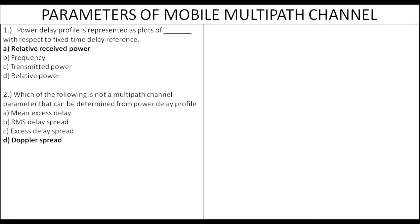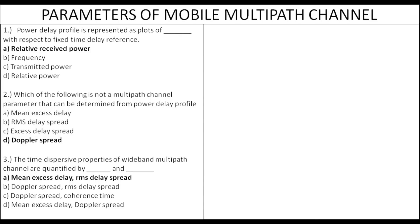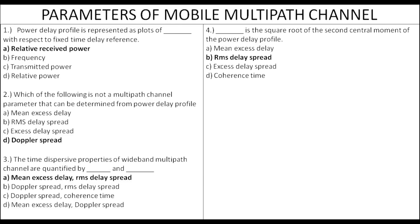For the multiple channel parameters, the delay profile determines mean excess delay, RMS delay spread, and excess delay spread. However, Doppler spread is not determined by the delay profile — it relates to time dispersive properties. Doppler spread and coherence time relate to the time varying nature of the channel.